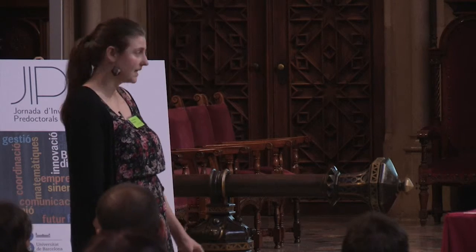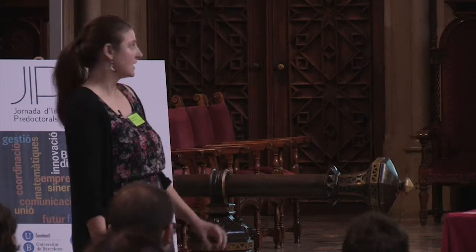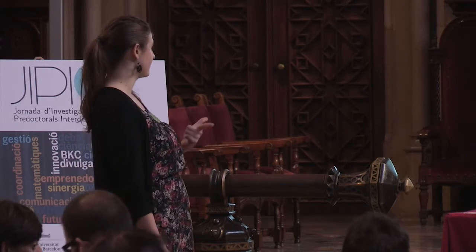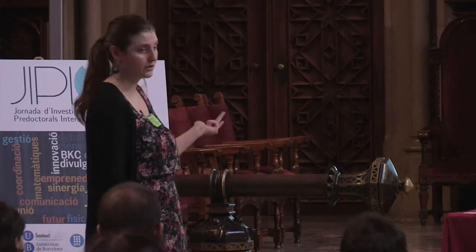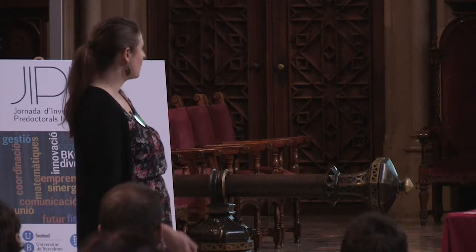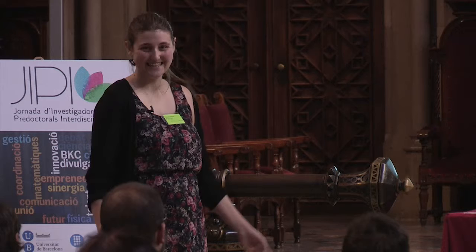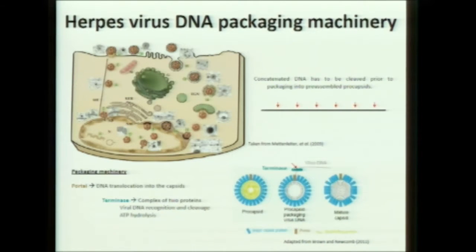This process deals mainly with what we call the phase problem. The spots that we have recorded contain information about amplitude and wavelengths of the X-rays, but not about their phase, and there are several methods that we can use to solve this problem. We want to explain one concrete example of a project in our lab, which is related to the herpes virus DNA packaging machinery. In the infection cycle of this type of virus, a long molecule of DNA containing many copies of its genome has to be cleaved into unit-length genomes, which afterwards have to be packaged inside the capsids of the virus.